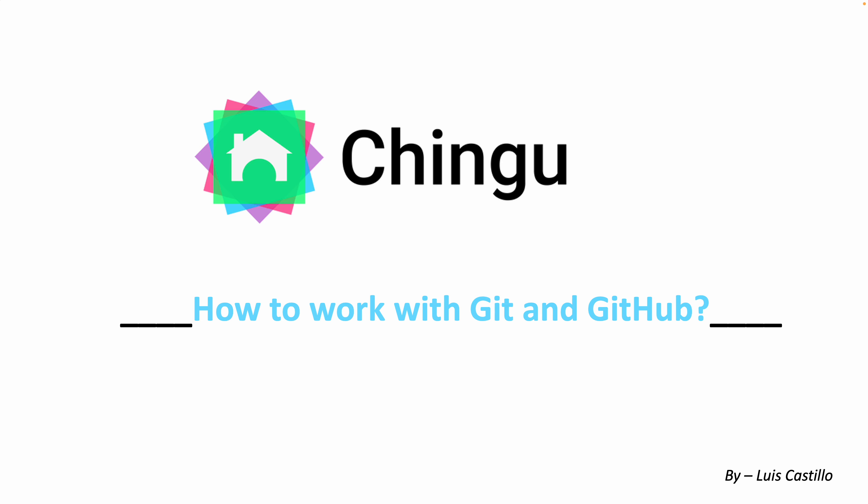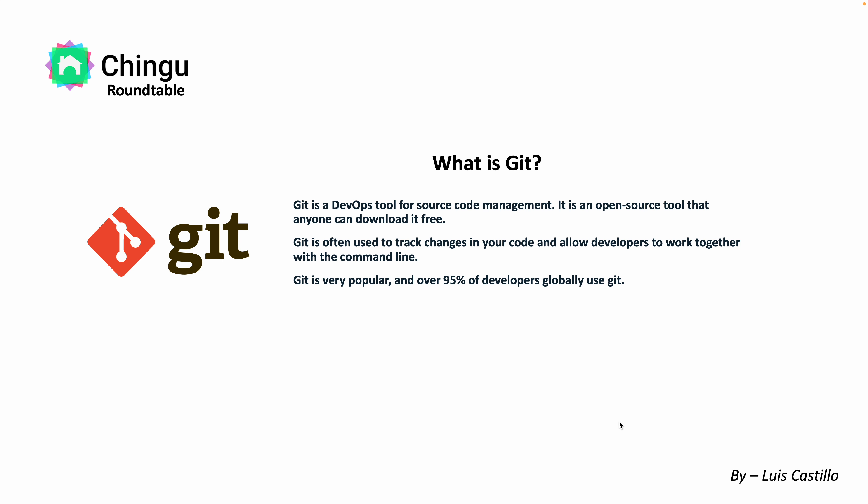First, let's talk about what is Git. Git is a developer tool for source code management. It is an open source tool that anyone can download for free. Git is often used to track changes in your code and allow developers to work together with the command line. Git is very popular — over 95% of developers globally use it, so trust me, this is a tool you will be using all the time when working as a group and in collaboration on other projects.